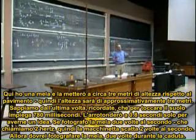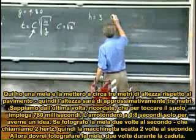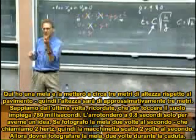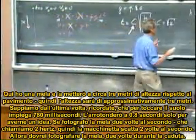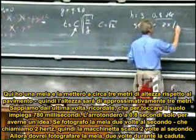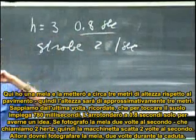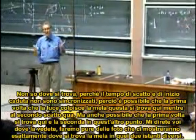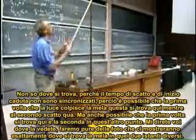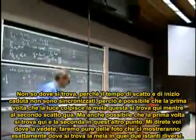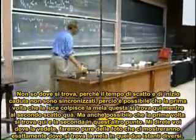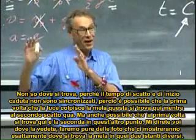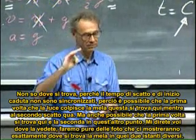We know from last time it was about 780 milliseconds to hit the floor — I'll round it to about eight-tenths of a second. If I flash, if I strobe it twice per second — that's two hertz — then I should hit that ball twice with my strobe light as it falls. I don't know exactly where it is, though, because when we strobe it and when I let the apple go, the two are not synchronized — so maybe the first time the light blinks it may be here, and the second time it may be here, or somewhere else. So the first thing I want to do is test your alertness. We will blink; you will tell me where you see them, but we will take a picture which will show us exactly where those two balls were.